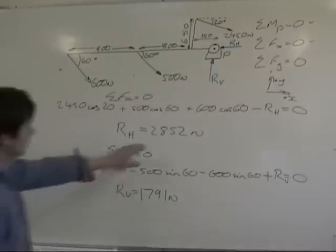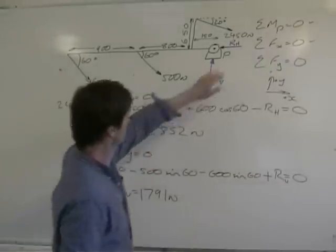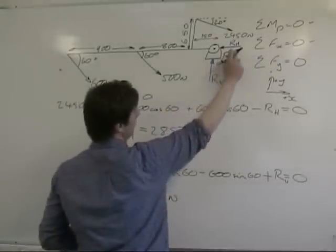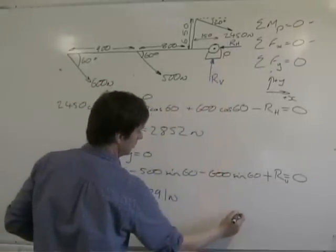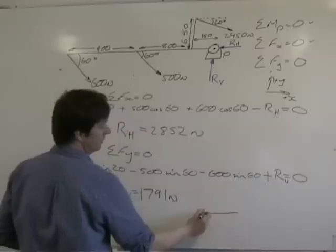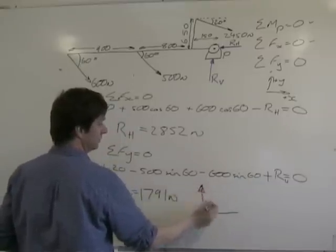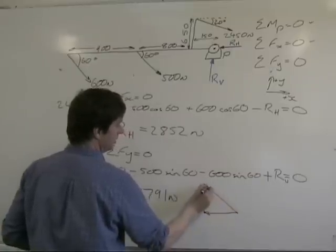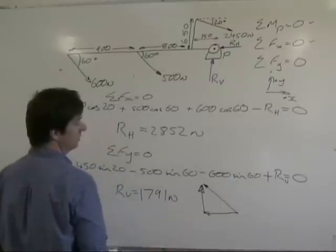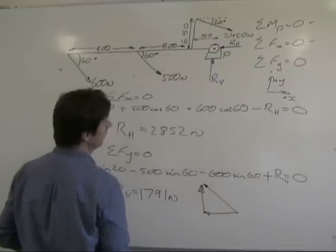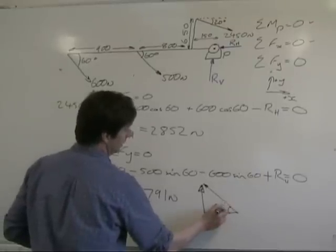Now you've got the horizontal component. It's positive, so the arrow direction was right. The horizontal component's coming like that. RV is also positive, it's going up. Use Pythagoras to find the resultant and find that angle there.